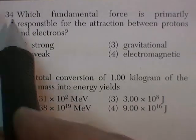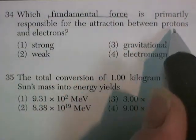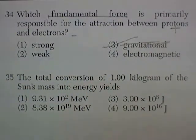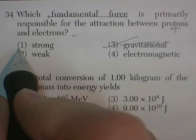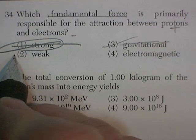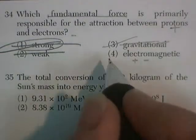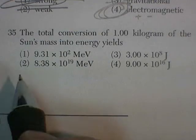Question 34. Which fundamental force is primarily responsible for the attraction between protons, which are positive, and electrons, which are negative? Well, the answer can't be gravitational. That's silly. Gravitational is the weakest of the forces, though it does extend over the greatest distance. A strong force is a nuclear force. A weak force is kind of responsible for radioactivity. Electromagnetic. That's the positive-negative force that holds the proton and the electron together. Electromagnetic.